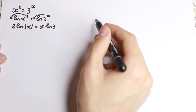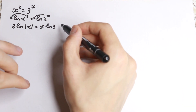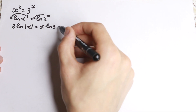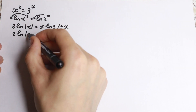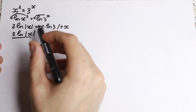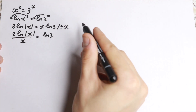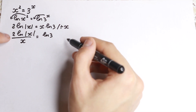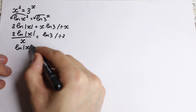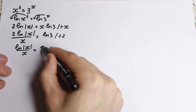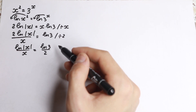Now let's divide both sides by x, because I want to group constants on the right-hand side and variables on the left-hand side. Dividing by x gives us 2 times natural log of absolute value of x, all over x, equal to natural log 3. Then let's divide both sides by 2, giving us natural log of absolute value of x over x equal to natural log 3 over 2. Constants on the right, variables on the left.